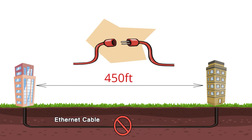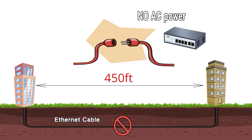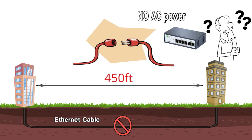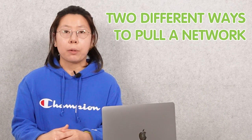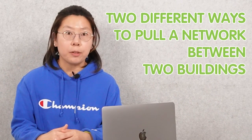The power source is not present at the middle, so adding a network switch to repeat the network is not an ideal option. Today in this video, I'm going to show you two different ways to pull the network between the two buildings.